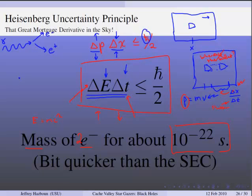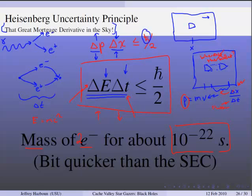Out of nothing — out of what I like to call the great mortgage derivative in the sky — you can get an electron and a positron for free, but only for some short, uncertain amount of time, before they pop back out of existence and return that energy. This is called the vacuum fluctuation energy, and we know it to be true.